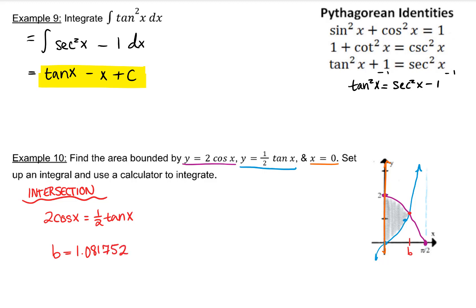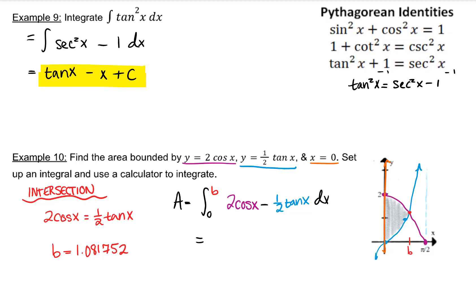Go ahead and save that, store that in your calculator so you can use it as your upper integration limit. Our integral will be upper curve minus lower curve from 0 to b. Using a calculator, you should get approximately 1.388.